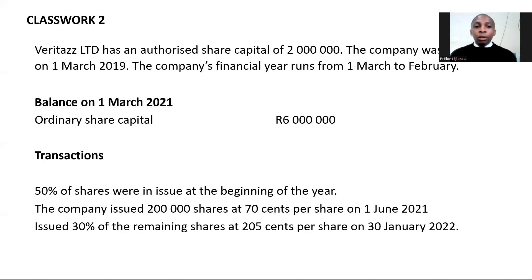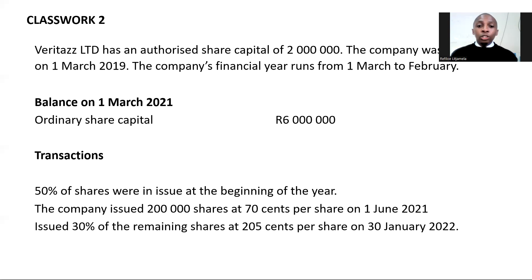The last part says that the company issued 30 percent of the remaining shares at 205 cents per share on the 30th of January 2022. We need to figure out how many remaining shares we have. We had two million shares at the beginning of the year and a million shares in issue, so we are left with one million shares. When you take that one million shares that are still reserved and haven't been issued, and minus the 200,000 shares issued on the 1st of June, the remaining number of shares will be 800,000. 30 percent of that 800,000 was issued on the 30th of January 2022 at 205 cents.